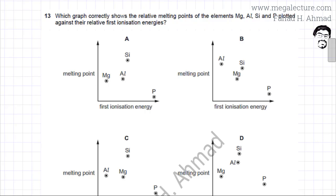The following past paper question reads: which graph correctly shows the relative melting points of the elements Mg, Al, Si, and phosphorus plotted against their relative first ionization energies.